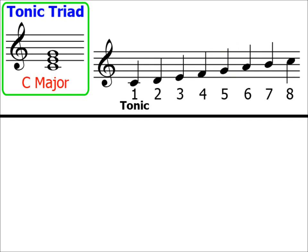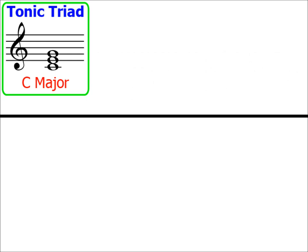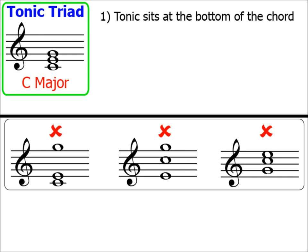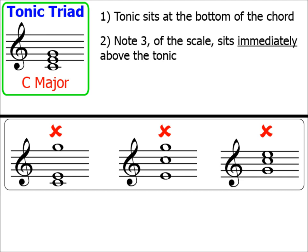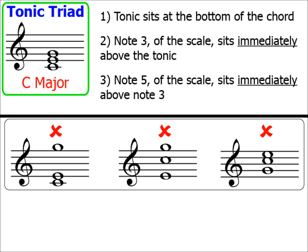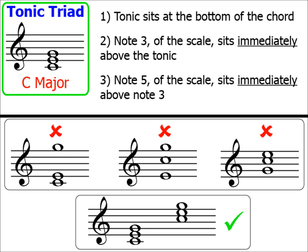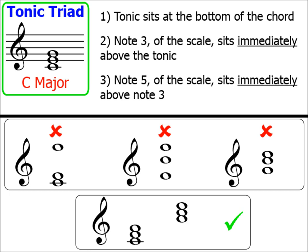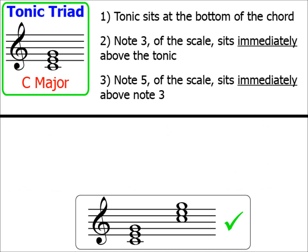Just a couple of things to note here. We've worked out that the notes in a C major tonic triad are C, E, and G. We can't just plonk these notes onto the stave in any order. It's very important that the tonic sits at the bottom. Note number 3 sits immediately above the tonic, and note number 5 sits immediately above note number 3. The remaining notes look like three balls balanced carefully on top of each other — they must always be stacked like this. Always make sure that when writing a tonic triad, the notes must sit neatly on top of each other.